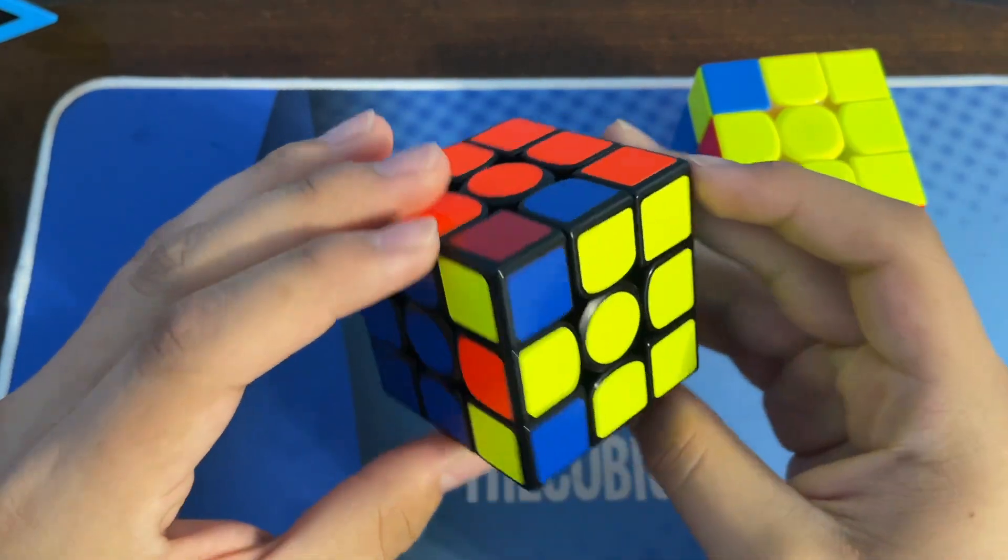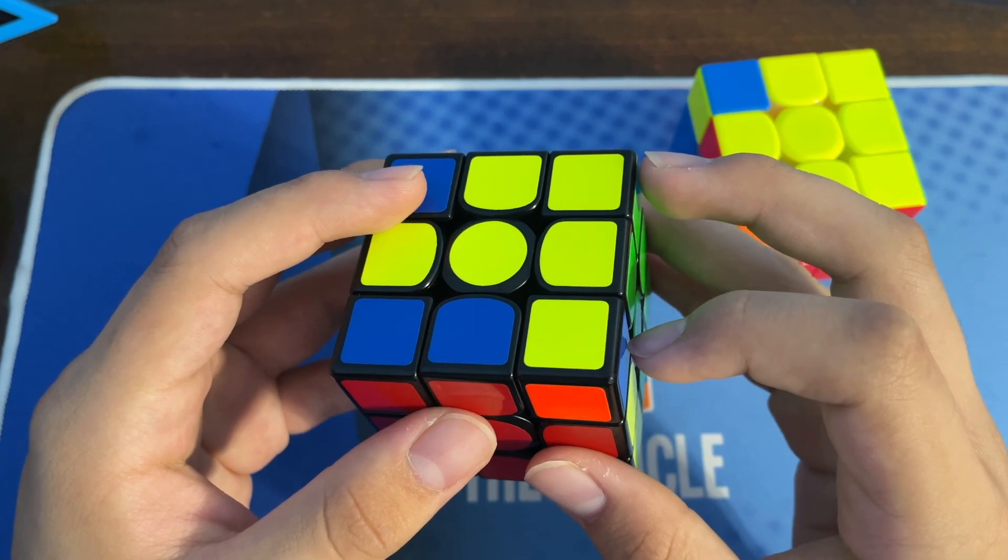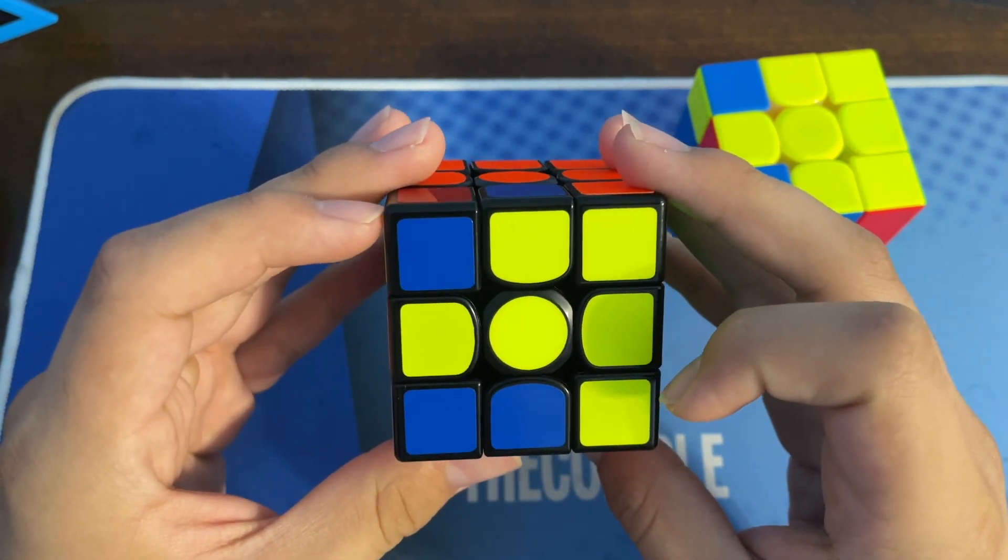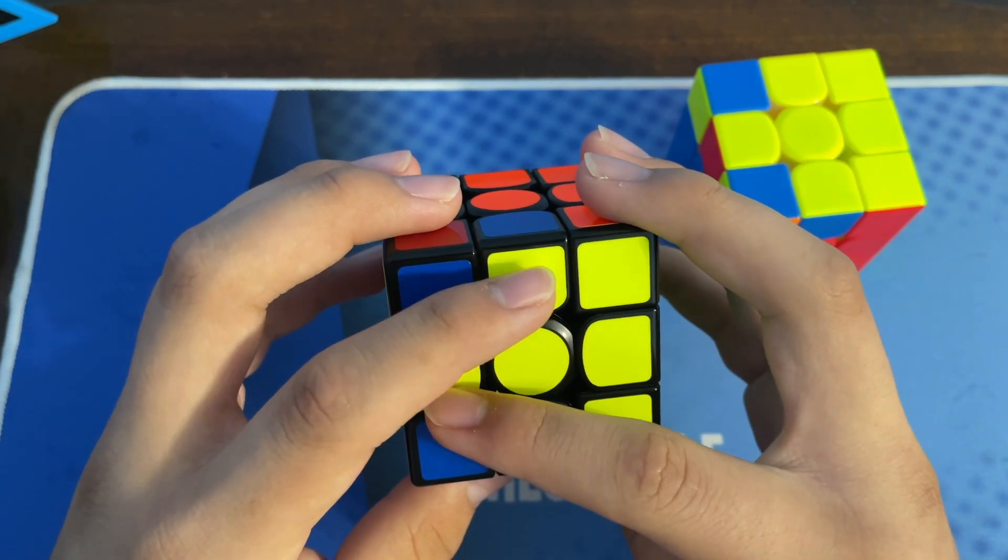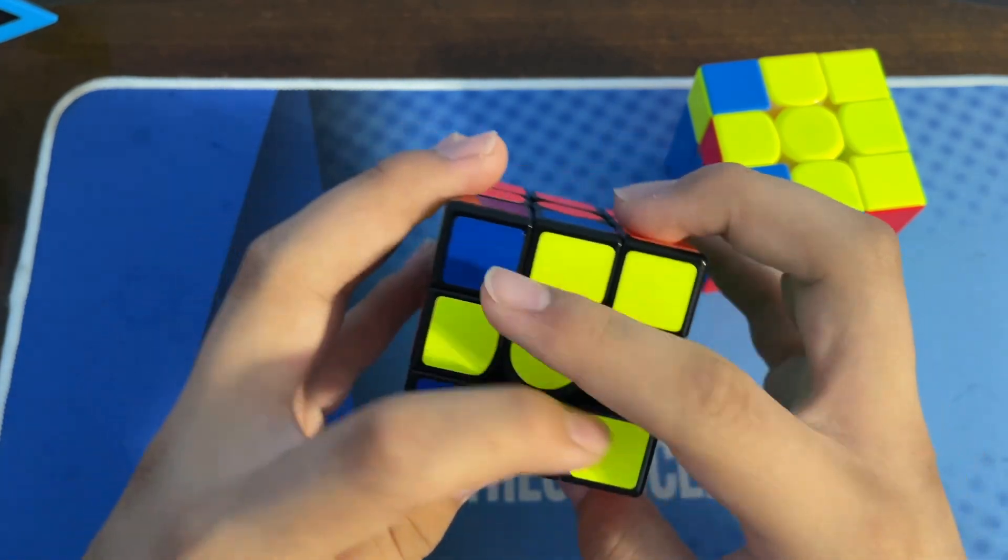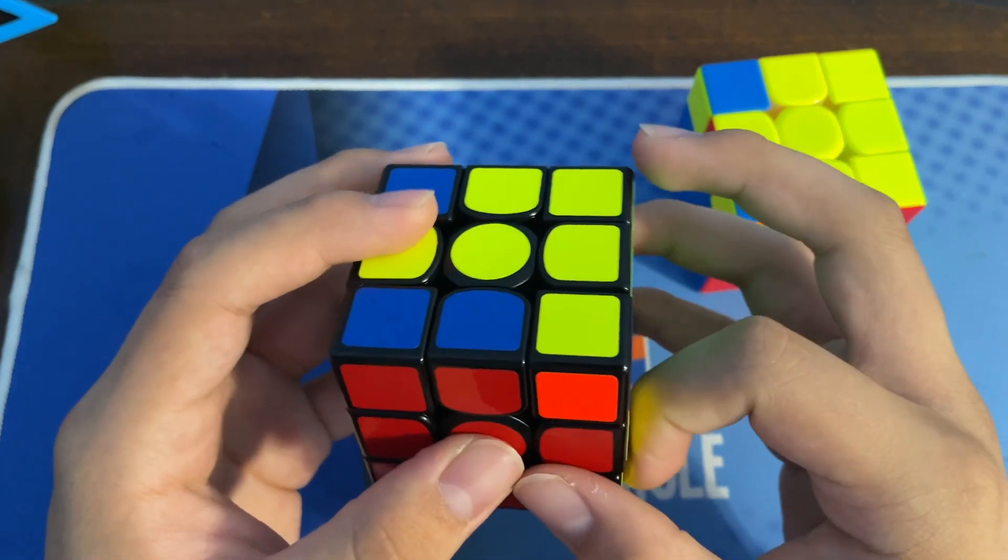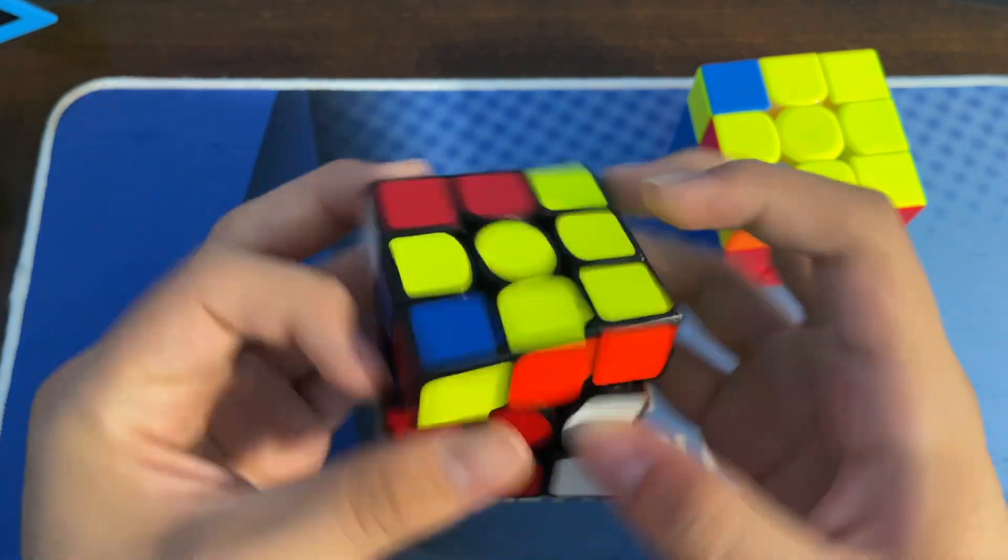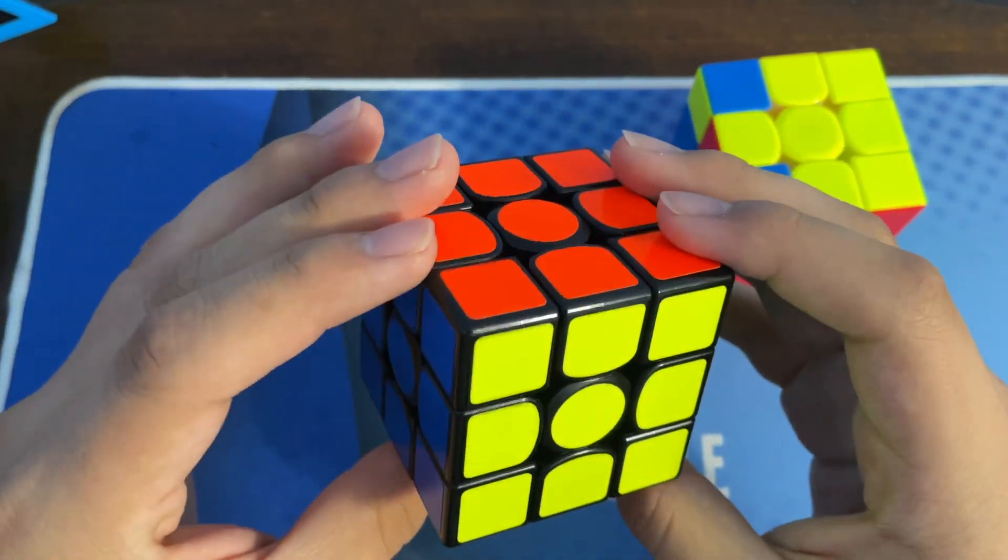If you need that again, here's the first case. We move the corner here so that way a Y perm is now set up. These two edges get swapped into the solved position and these two corners get solved into the solved position. We do an F followed by a Y perm, and then we should have it solved.